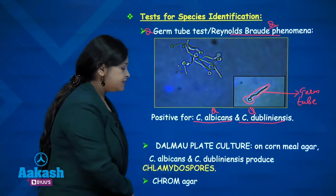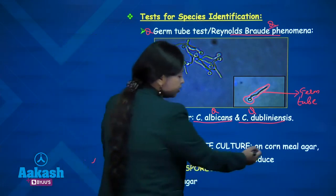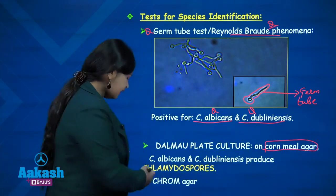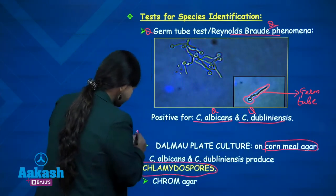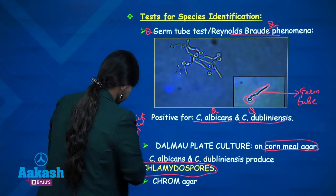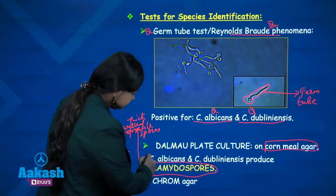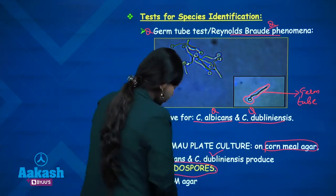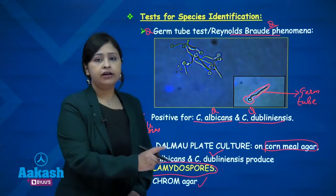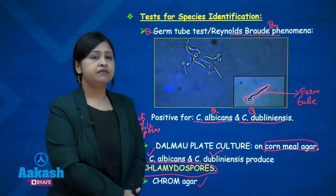Next is the Dalmau plate culture technique, in which Candida is grown in a nutritionally deficient medium — cornmeal agar. When nutrition is deficient, Candida produces chlamydospores, which are thick-walled refractile spores produced only by Candida albicans and Candida dubliniensis. Another method is chromagar, in which different Candida species produce different colors when inoculated, helping in isolation as well as identification.